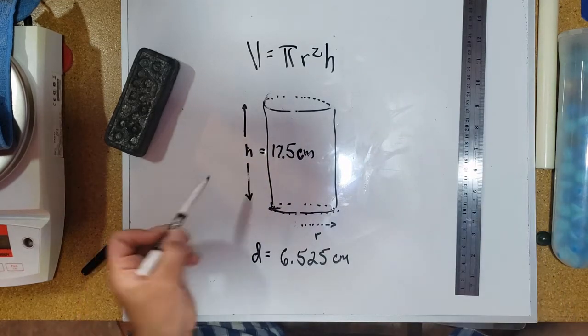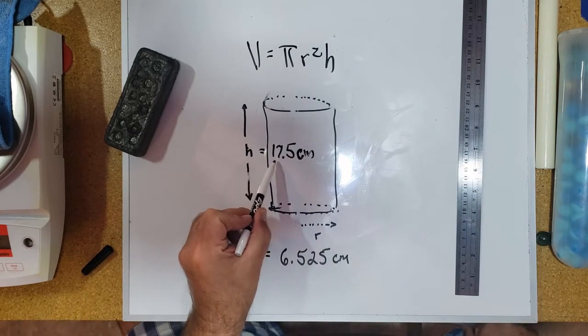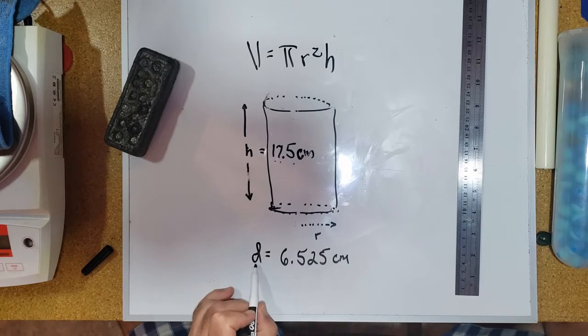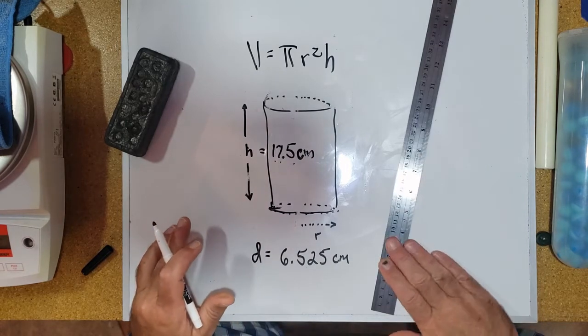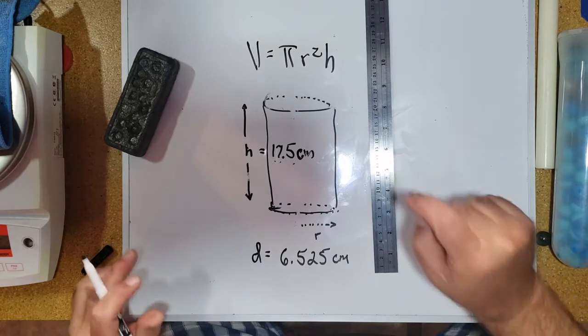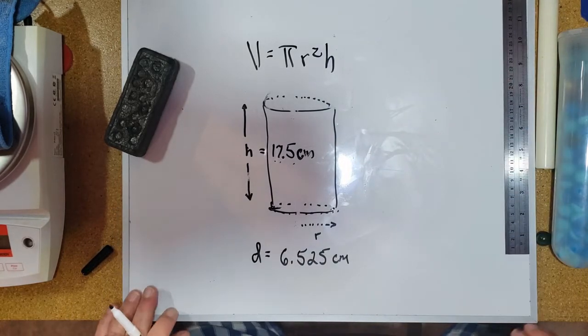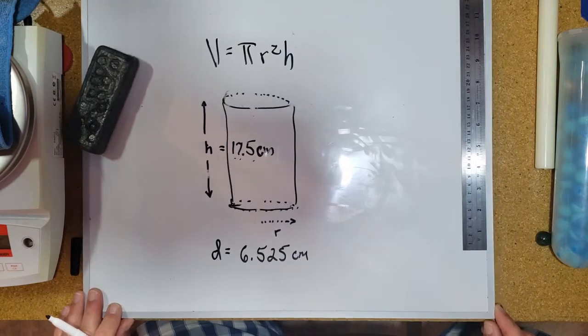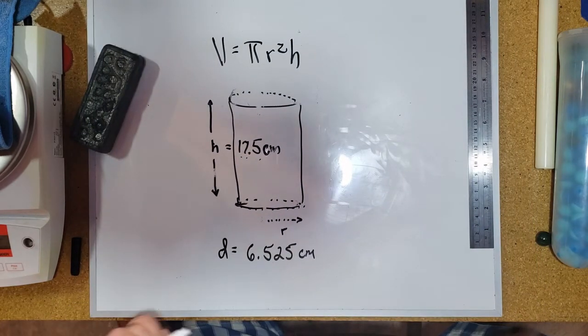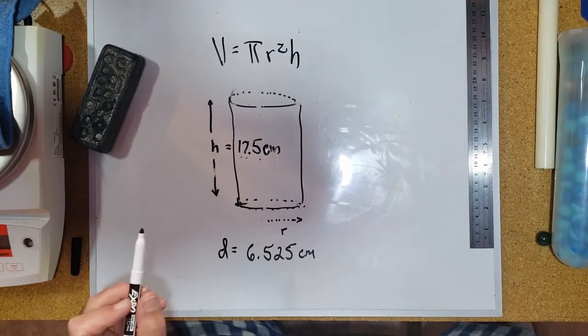Take note real quick that the height I was able to measure to three sig digs, whereas the diameter I was able to measure to four sig digs. And that all has to do with how accurate of a device you're using.